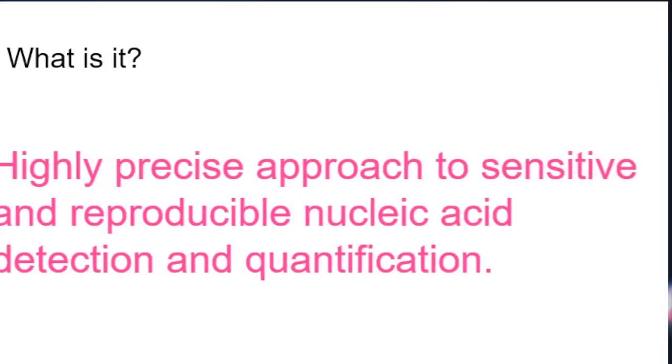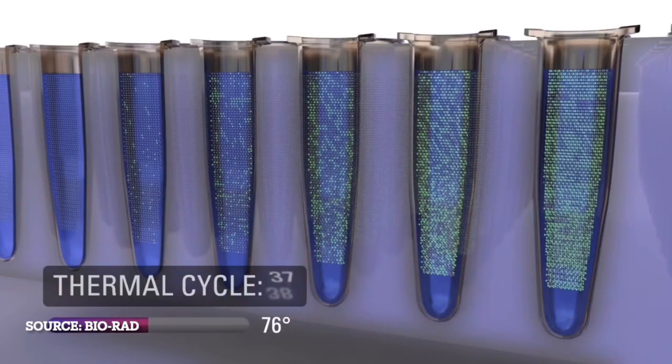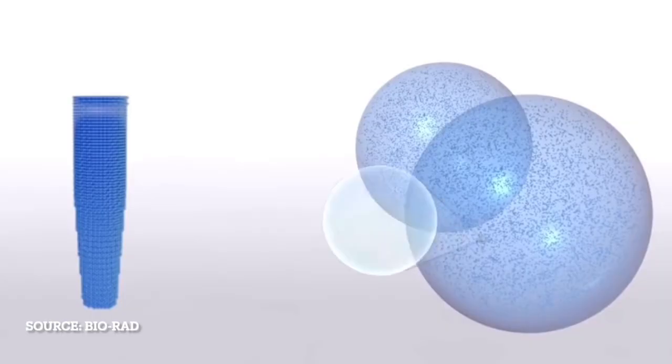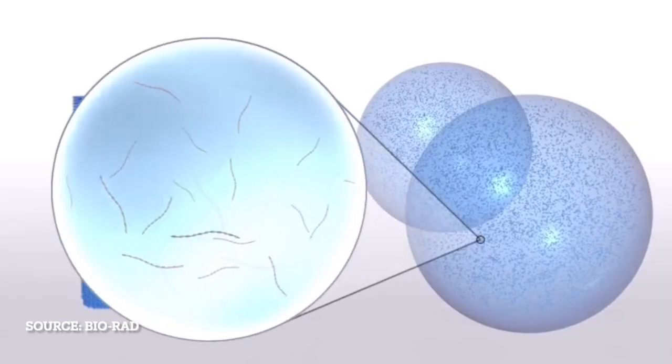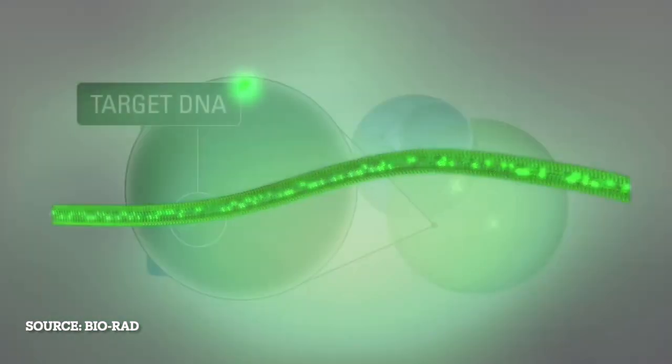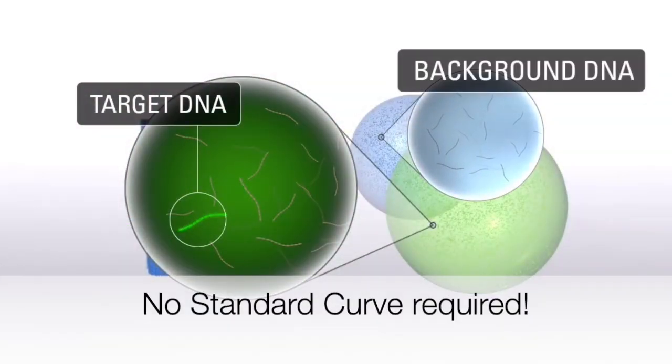Digital PCR is a highly precise approach to sensitive and reproducible nucleic acid detection and quantification. The measurements are performed by dividing the sample into partitions such that there are either zero, one, or more target molecules present in any individual reaction. Each partition is analyzed after endpoint PCR cycling for the presence or absence of a fluorescent signal, and the absolute number of molecules present in the sample is calculated. It does not rely on a standard curve for sample target quantification.